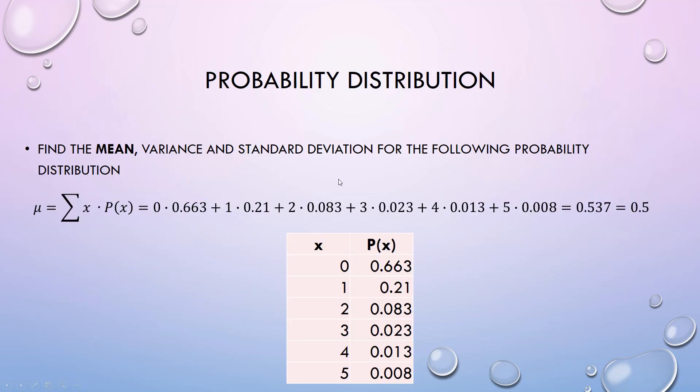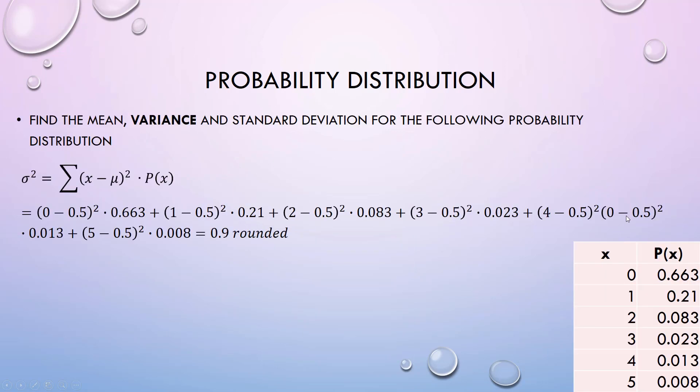For a probability distribution, if I want to find the mean, it's just the formula taking each x value - 0, 1, 2, 3, 4, 5 - and multiplying it by the probability and adding all of those up. For the variance, I take each x value minus the mean that I just found, 0.5, times the probability, and I add all of those up. For standard deviation, just square root.